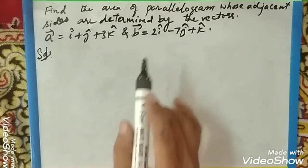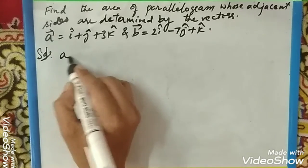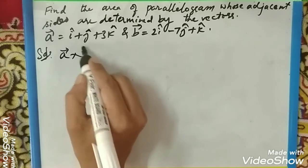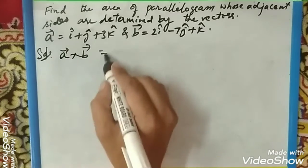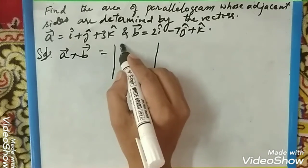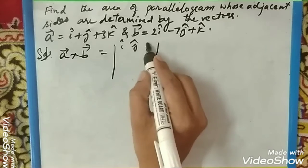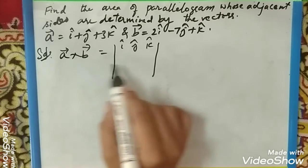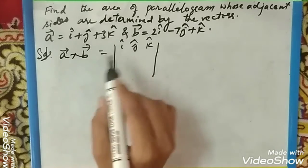To find the area of the parallelogram we need to take a cross b. The formula for a cross b is to write the determinant where the first row is i, j, and k values. First write the a vector i, j, k values.